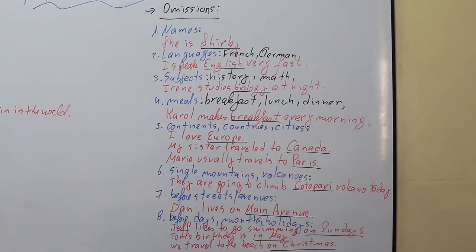The next one, it is omitted before streets and avenues. Dan lives on Main Avenue.